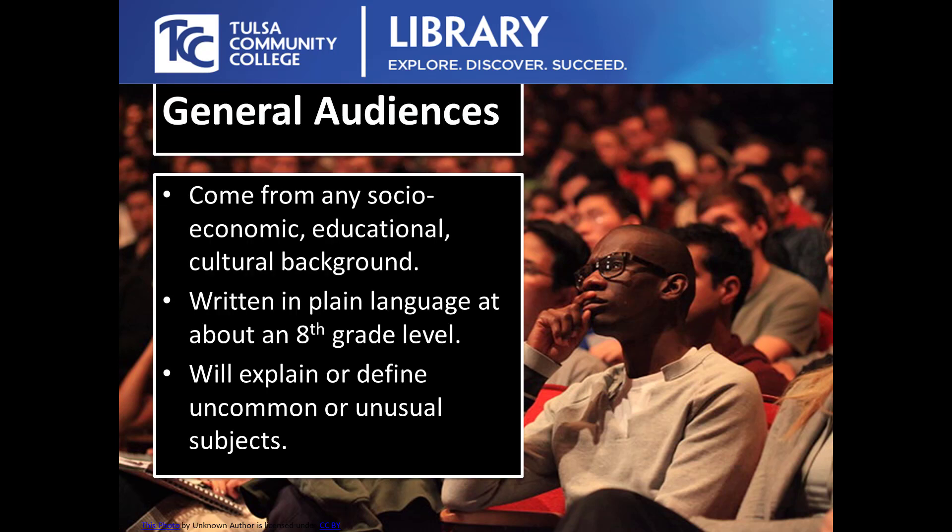Articles written for a general audience are written for the general public — people from any background you can imagine. The author will typically write at about an eighth-grade level. Language is plain and simple, and if the author is writing about something outside the realm of common knowledge, they will define the subject. A good example is something written in National Geographic, or Nat Geo for short. If Nat Geo writes about something well known to archaeologists but not the general public, the writers take time to explain what they are writing about.